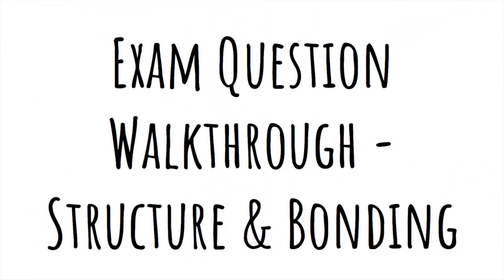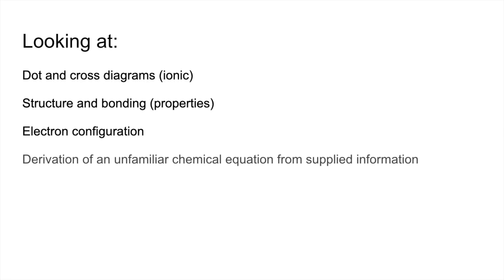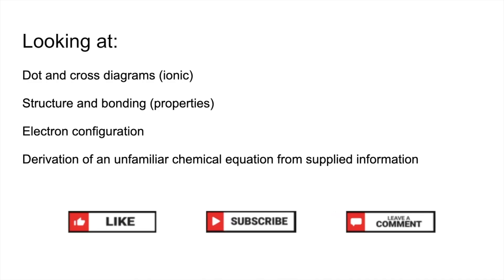I've got an exam question walkthrough here for Structure and Bonding. The question looks at dot and cross diagrams for an ionic compound, Structure and Bonding properties, electron configuration, and the derivation of an unfamiliar chemical equation from supplied information. Don't forget to like and subscribe, and if you want to leave a comment to suggest a future topic, please do so.